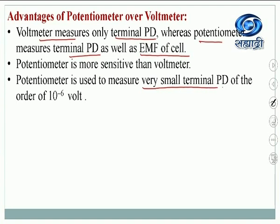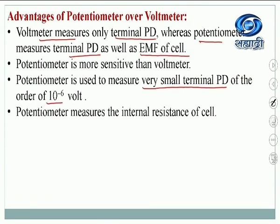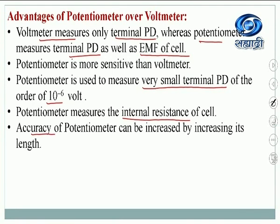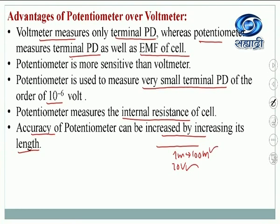A potentiometer can be used to measure very small terminal potential differences of the order of 10 raised to minus 6 volt, by increasing the length of the wire. Also, we have seen that the potentiometer can measure internal resistance of the cell, which we cannot do with a voltmeter. The accuracy of a potentiometer can also be increased by increasing its length — for example, a 100 meter wire measuring 10 volt will be more accurate than a 1 meter wire measuring the same 10 volt.